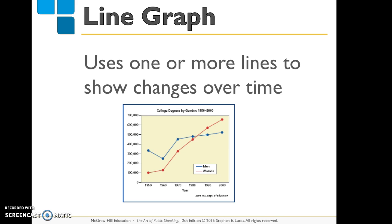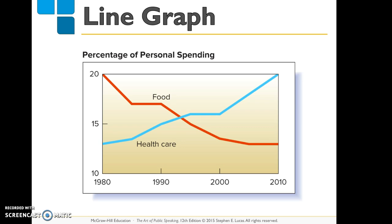A line graph uses points connected by lines to demonstrate how something changes or fluctuates in value. For example, this graph shows college degrees by gender — the blue line is men and the red line is women. Through this visual you can see that women throughout time have been getting more college degrees than men. Here's an even simpler one showing percentage of personal spending: you can see that as health care spending has gone up, food spending has gone down, just through the line.